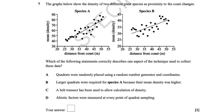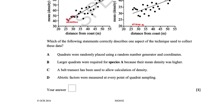A graph shows the density of two different plant species as proximity to the coast changes. You would start by the strand line, placing quadrats every metre to measure the density of species A and B. You have not placed them randomly using random number coordinates, as that would be used to compare two different areas. The answer is C: a belt transect was used.